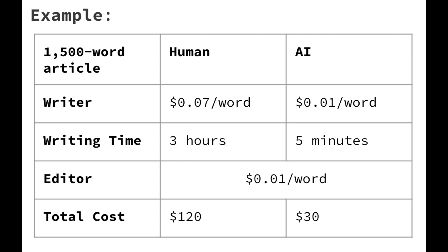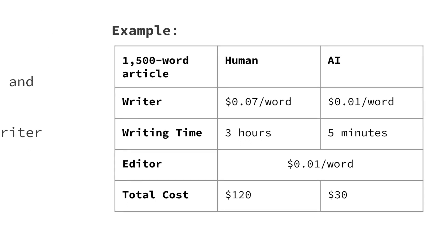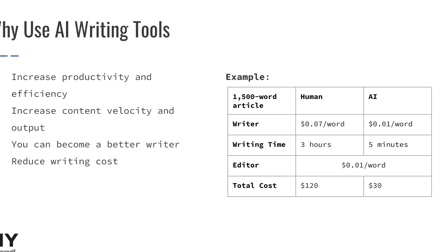Either way, it's a big time savings. And in terms of editing, we recommend actually using an editor, whether you're using a human writer or an AI tool. On average, we came up with about 1 cent per word as a good rate for editing. When we multiply those together, we come up with a total cost for human written content of about $120 per well-researched blog post. Whereas an AI written post with editing costs about $30, which is 25% of the cost in a fraction of the time. So you can see that there's a huge savings there.